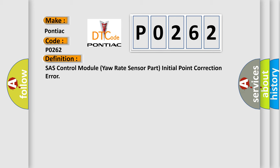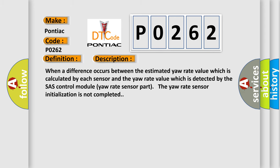And now this is a short description of this DTC code: When a difference occurs between the estimated yaw rate value which is calculated by each sensor and the yaw rate value which is detected by the SAS Control Module yaw rate sensor part, the yaw rate sensor initialization is not completed.